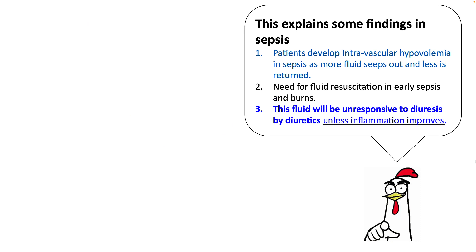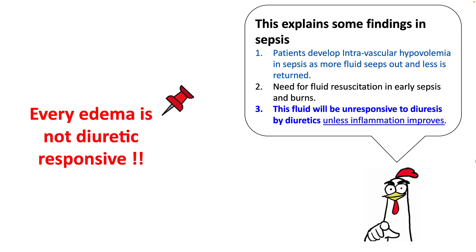Inflammation generates negative interstitial pressure and therefore volume loss from the vascular to interstitial spaces. Patients develop intravascular hypovolemia as more fluid seeps out and less is returned, because most fluid is being imbibed by glycosaminoglycans. This fluid will be unresponsive to diuretics unless the inflammation improves — an important takeaway is that not every edema is diuretic-responsive.